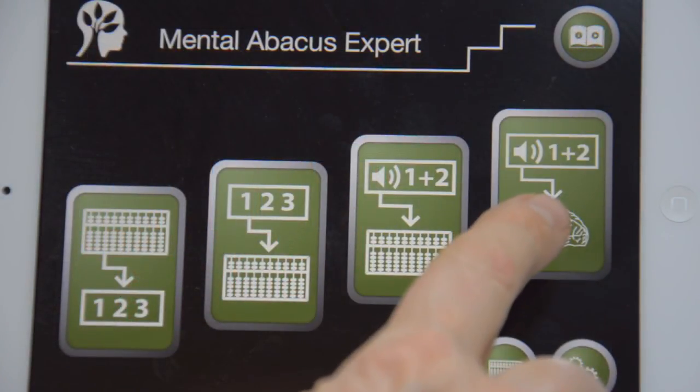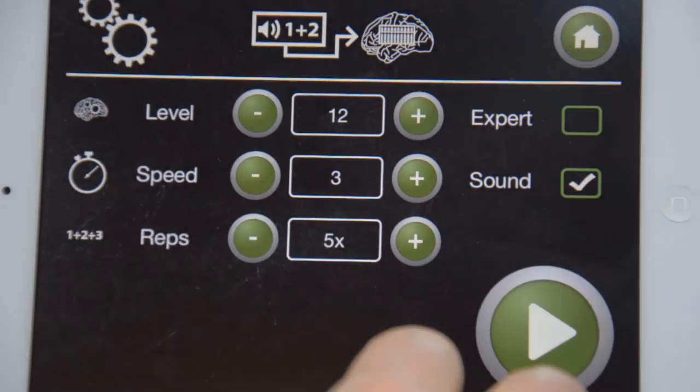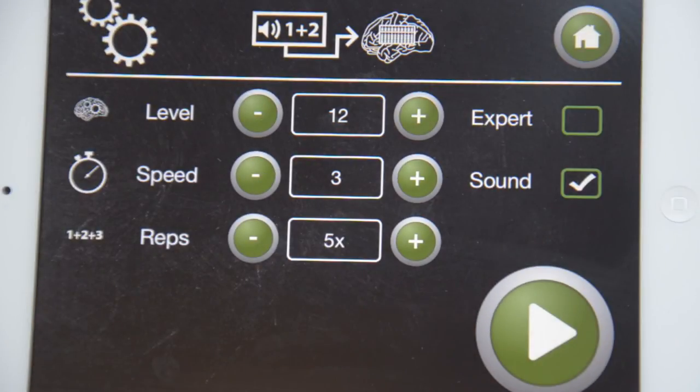In the fourth and last exercise the goal is to develop your ability to imagine the abacus for your inner eye. This is the so-called mental abacus technique.